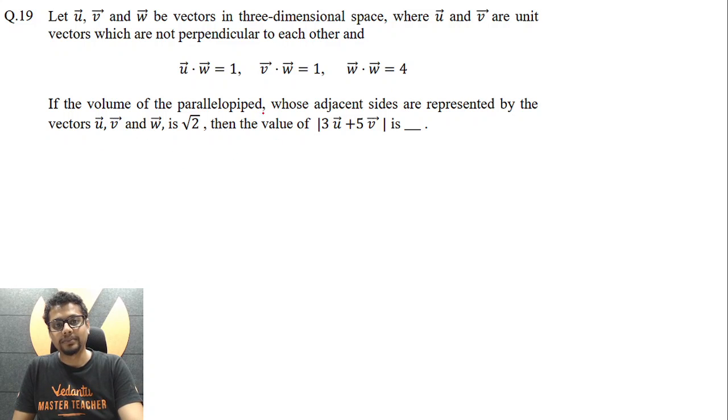If volume of parallelepiped whose adjacent sides are represented by vectors u vector, v vector, and w vector is root two, then we have been asked the value of mod of three u vector plus five v vector. So this is a kind of question whose answer is supposed to be a non-negative integer.